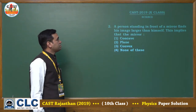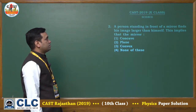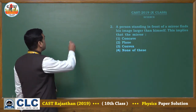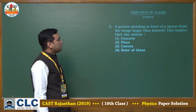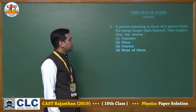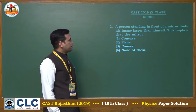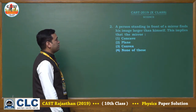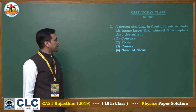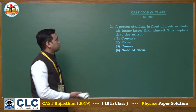The next question is: a person standing in front of a mirror finds his image larger than himself — this implies that which mirror is being used? We have to find which mirror can make the image larger than the person. The correct answer will be concave, because a concave mirror forms a real image larger than the object. So the correct answer is the first option.